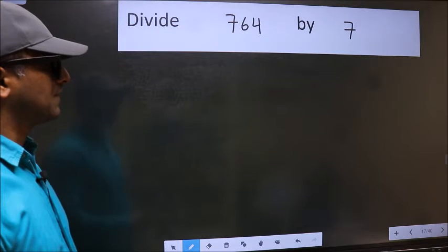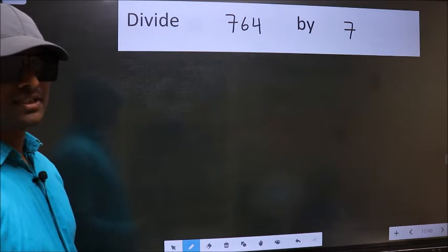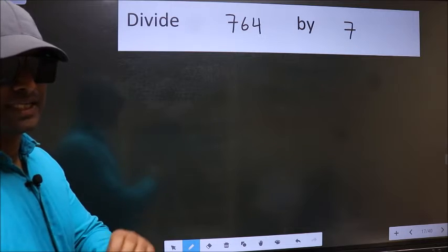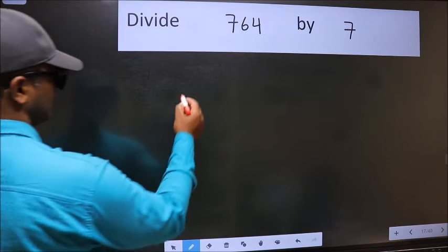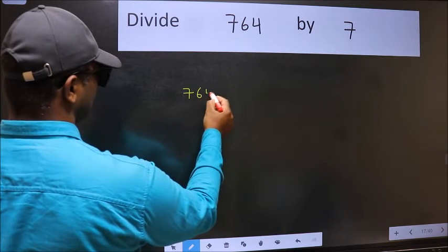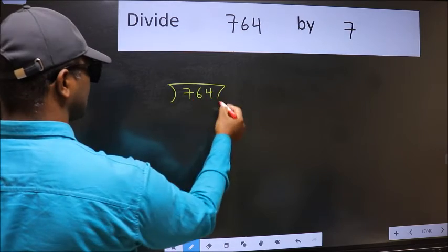Divide 764 by 7. To do this division, we should frame it in this way. 764 here and 7 here.